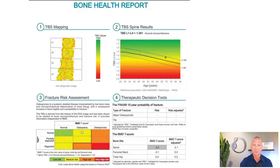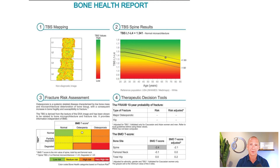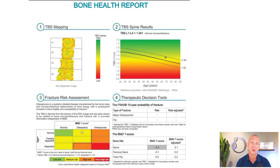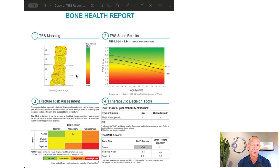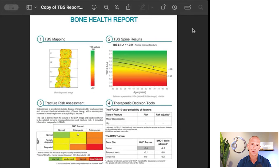Let's shift to TBS — trabecular bone score. DEXA has weaknesses because it only measures density, and there's variation. We also need to measure quality of bone; density is part of the equation but quality matters too. TBS helps us understand quality to some extent. I don't always love TBS because it doesn't always give a great report, but I'll show you why it's not particularly actionable. The TBS score uses a similar T-score chart, showing how T-scores worsen on average over time.